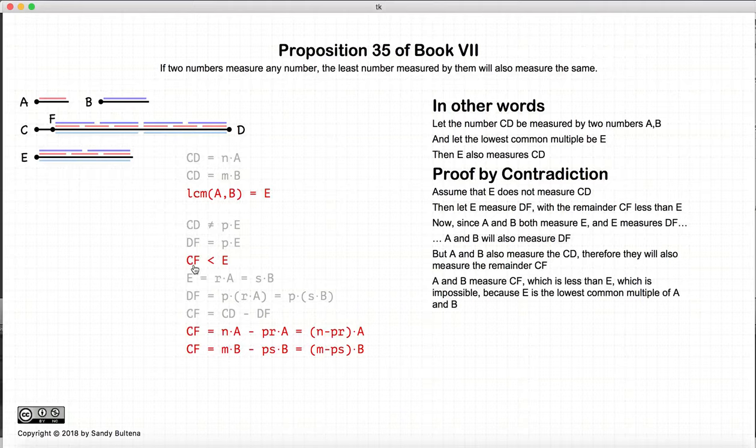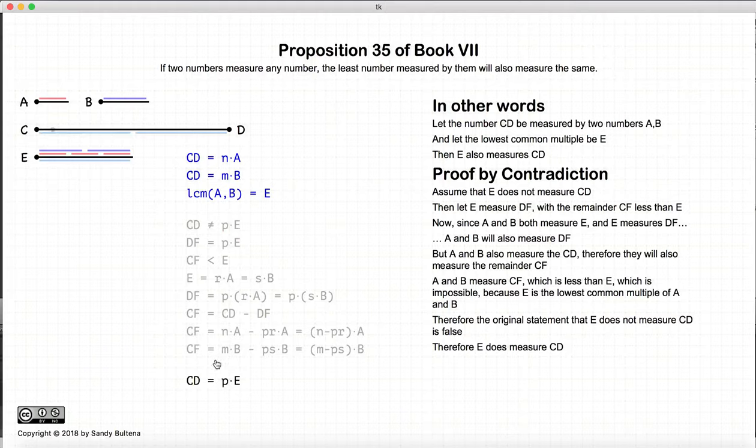However, CF is less than E, but E is the lowest common multiple of A and B. So A and B cannot measure CF if CF is less than E, and E is the lowest common multiple. So this is where we end up with our contradiction. So the original hypothesis that CD is not measured by E cannot be true. So therefore CD is measured by E.